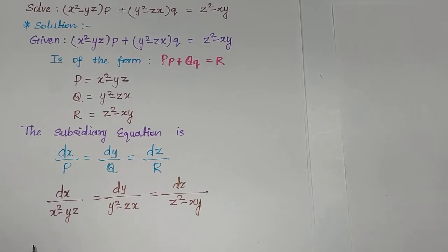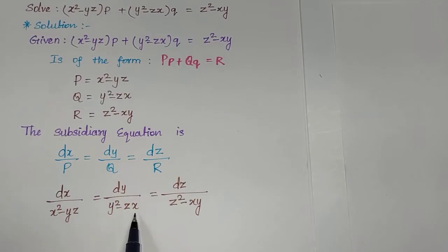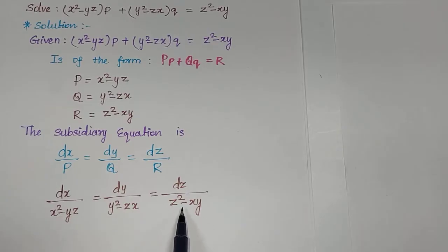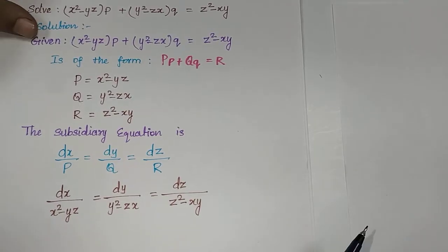Can we interchange the terms using y, z, x as multipliers? Substituting y, z, x: y(x² - yz) + z(y² - zx) + x(z² - xy) — it is possible, we can eliminate the terms. So I am taking the multiplier y, z, x.